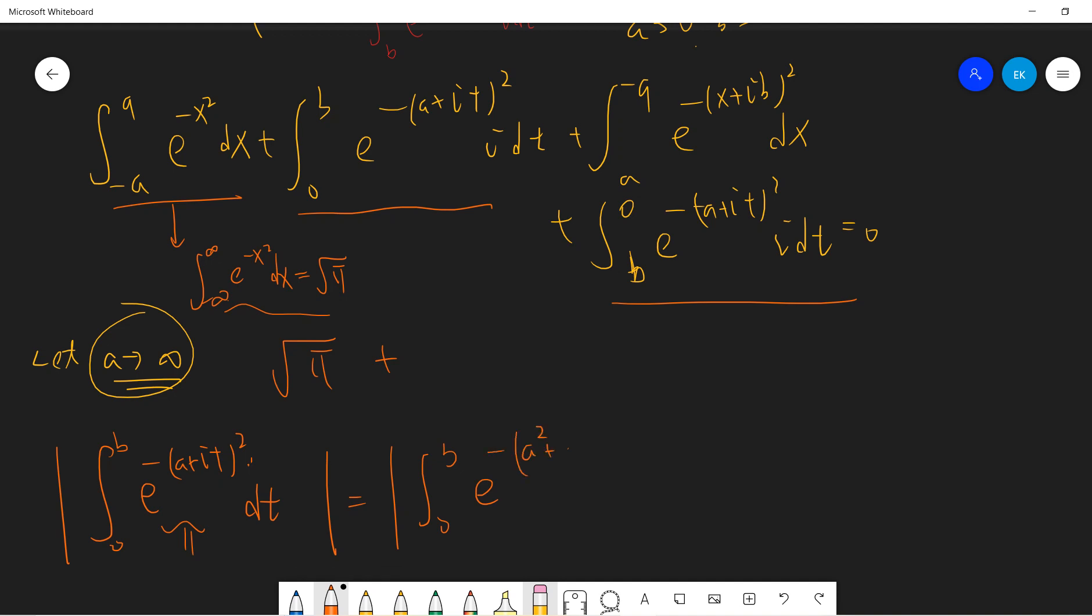This term is exponential of minus a squared minus t squared plus 2at dt. These two i terms are actually imaginary; I can take the absolute value, so I can neglect this term and only consider this.